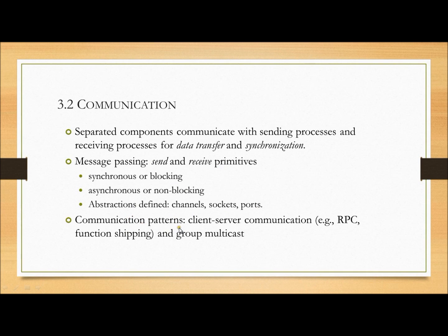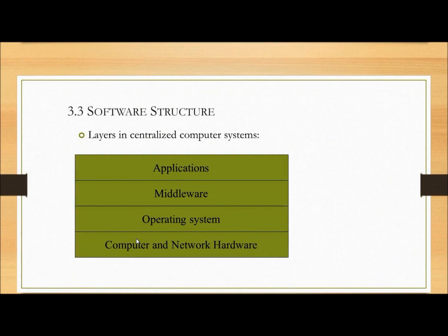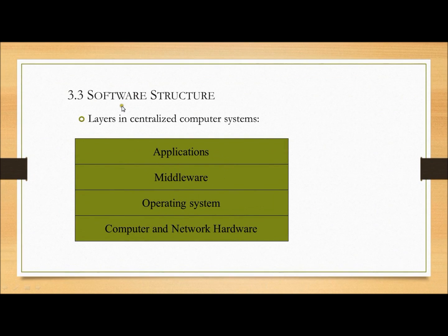Communication patterns include client-server communication (example: RPC — remote procedure call, function shipping) and group multicast. Coming to software structure: for a basic computer system, we have software layers like applications, middleware, operating systems, and computer networks.